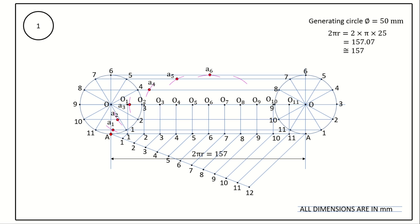Center point O7, radius 25 millimeter, draw an arc cutting the line through 7 — mark point A7. Center O8, radius 25 mm, cut line through 8 — mark A8. Center O9 → A9. Center O10 → A10. Center O11, cut line through 11 — mark A11. The last point is A, touching the baseline. Point A started at the baseline, went up to half the revolution, came down, and after one complete revolution touches the baseline again.